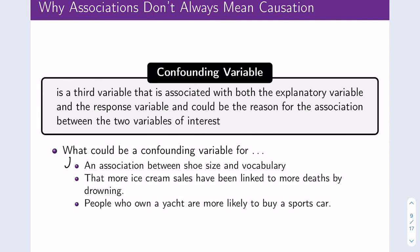The third scenario: people who own a yacht are more likely to buy a sports car. Is this saying that owning a yacht causes you to buy a sports car? Probably not. It's probably saying that people who have a lot of money and more disposable income are more likely to buy a yacht, and they're also more likely to buy a sports car. So wealth or disposable income is the confounding variable here.